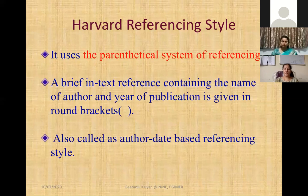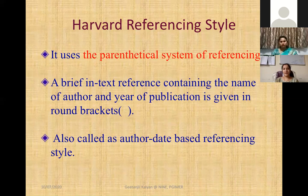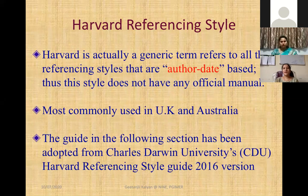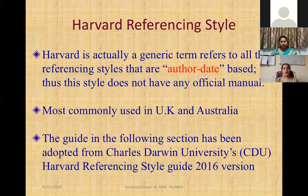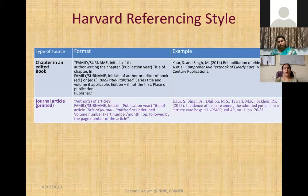The guide in this section has been adopted from Charles Darwin University (CDU) Harvard Referencing Style Guide, 2016 version. For journal articles in Harvard style, write: author's family name, initials, publication year, title of the article, title of the journal, volume, issue, and page numbers. The publication year is very important and comes early. Comparing to Vancouver style where we wrote 'Cor S', in Harvard you write 'Cor, S.' with double commas and different punctuation. The format for authors differs — in Vancouver we had 'Singh A', here it would be 'Singh, A.' with commas placed differently.